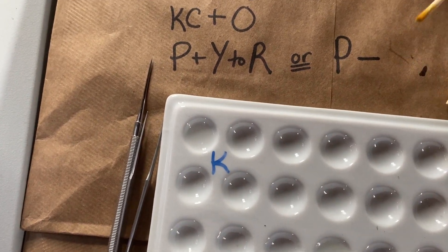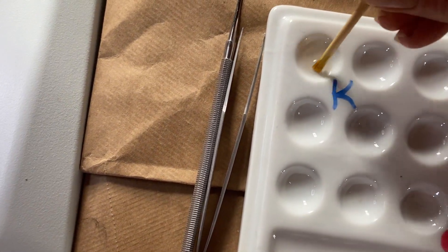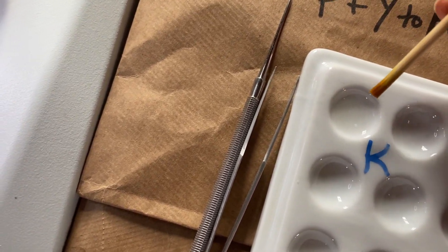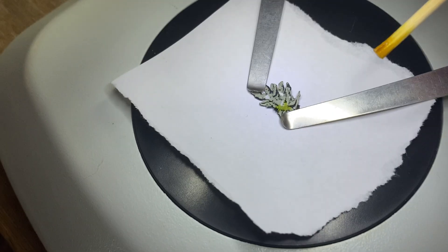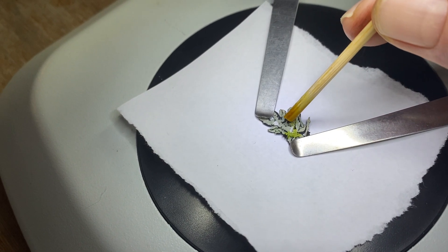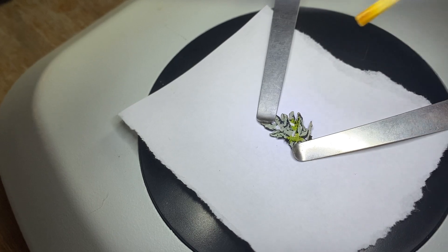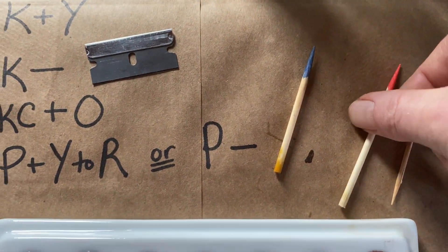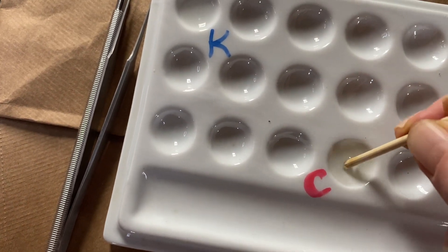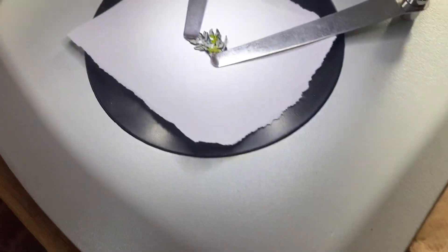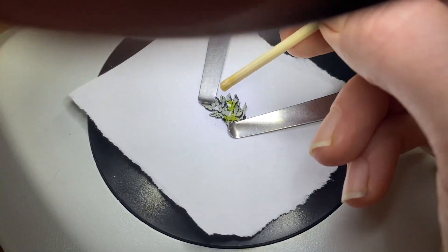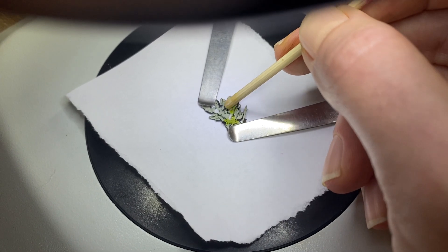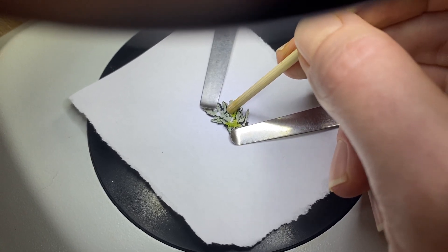So again, I'm going to use my blue toothpick, put it in the K chemical, and we're just going to drop it right there. And quickly, I will follow with my red toothpick. A little bit of the C test. I'm going to put it right back on that same spot. And mix it together a little, see what I get.